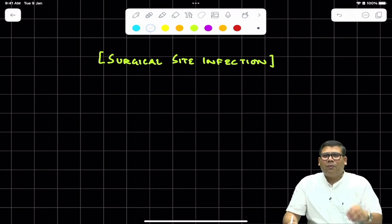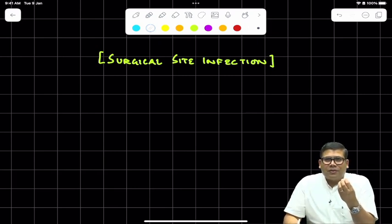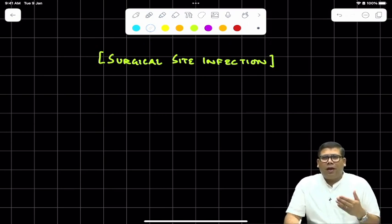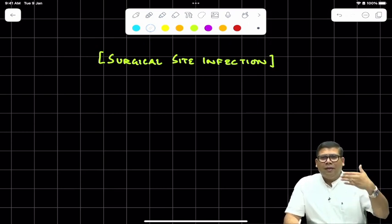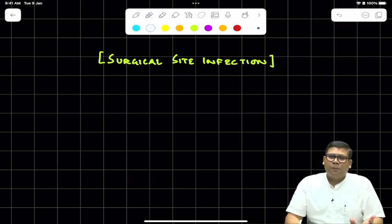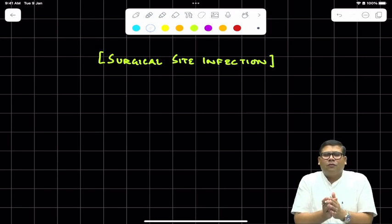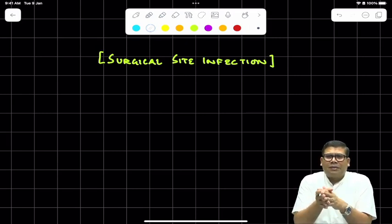When we talk about surgical site infection, whenever we do any surgery or procedure, you have to cut the skin, give a proper incision, and then reach that organ. During this course, there is a breach of natural protection and natural barriers, and thus there is a risk of entry of microbes.